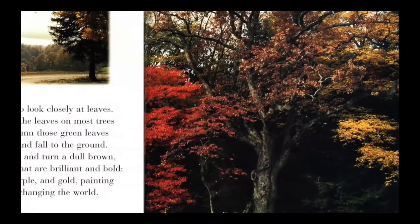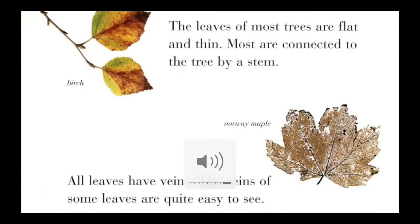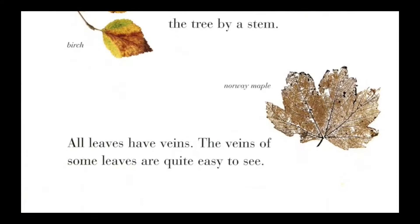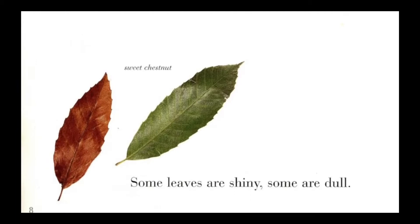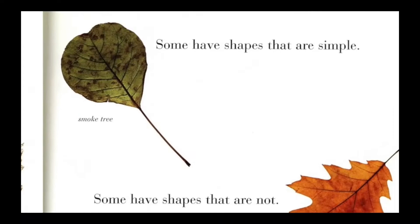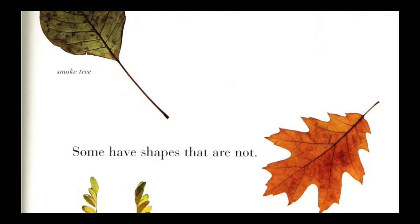The leaves of most trees are flat and thin, and most are connected to the tree by a stem. All leaves have veins — the veins of some leaves are quite easy to see. Some leaves are shiny, some are dull. Some have shapes that are simple, some have shapes that are not.